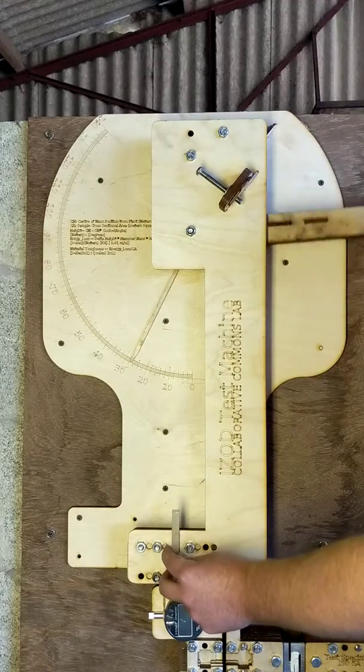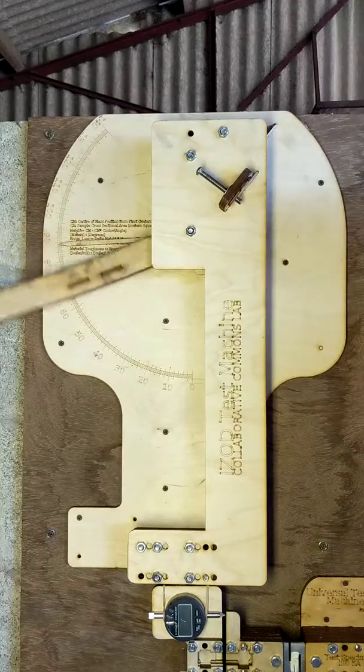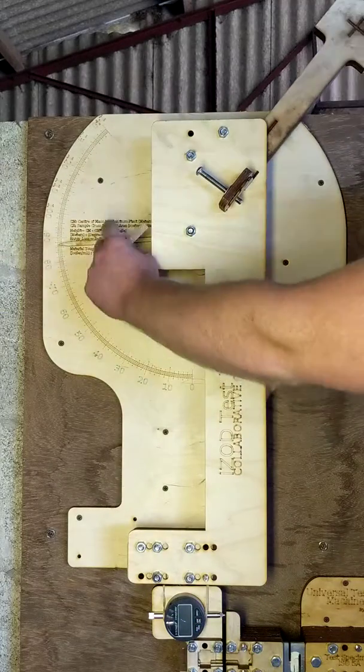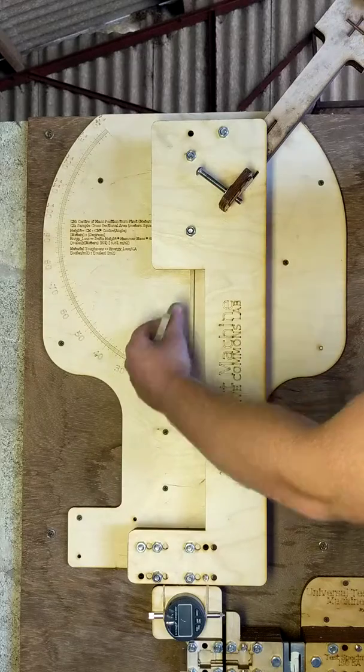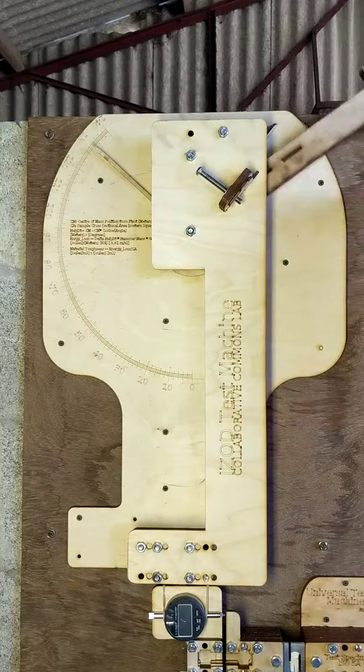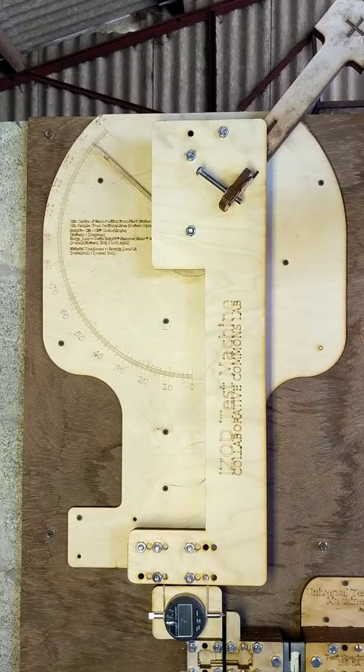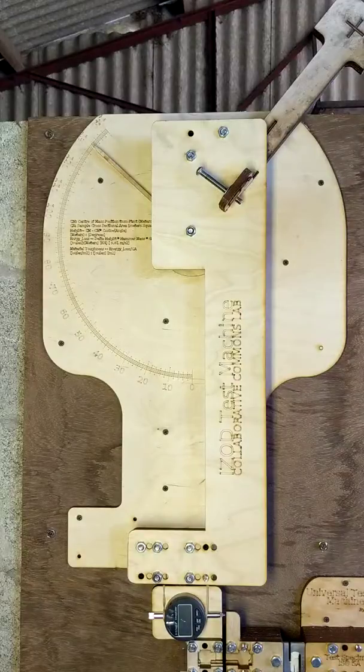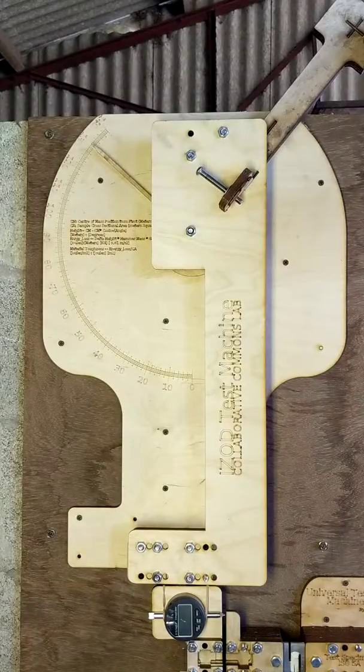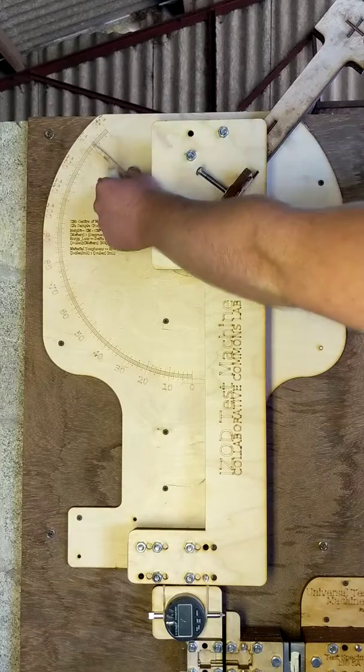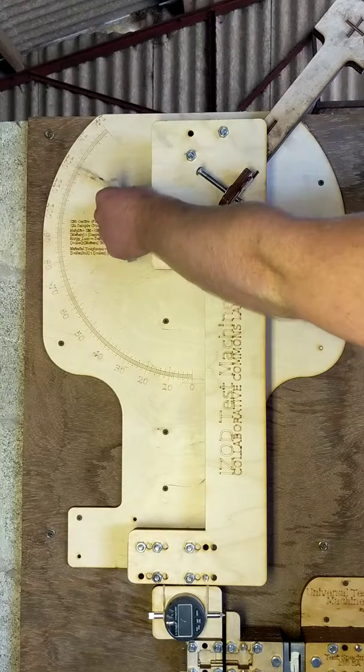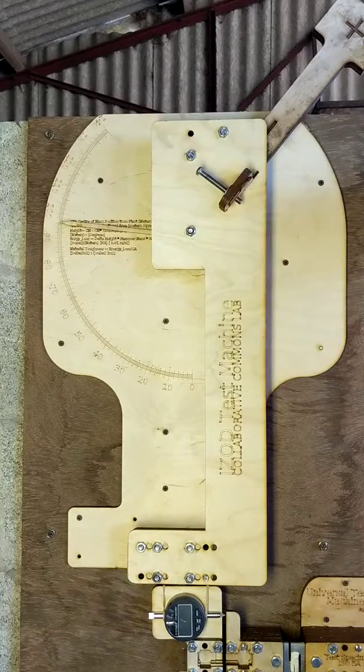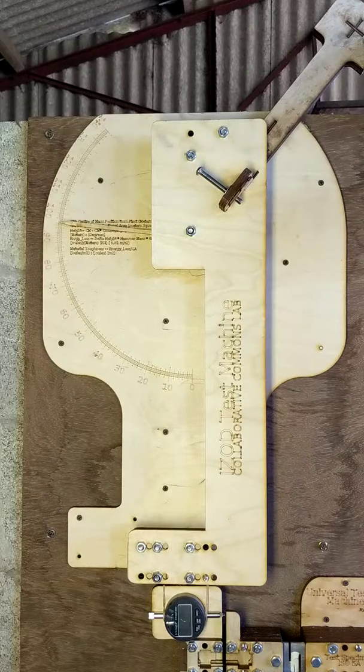So without anything in, that's how much energy the hammer's lost from windage and bearing losses. Then when you put a sample in, it will come further down, and from that difference in height and knowing the weight of this, we can work out how strong it is in comparison.